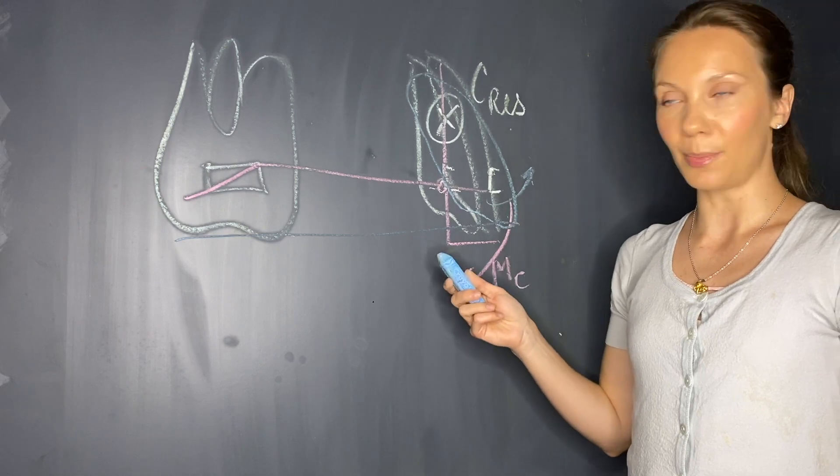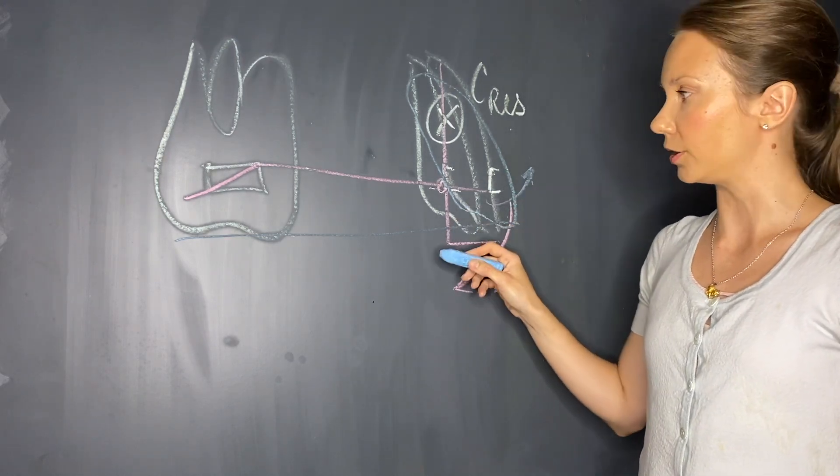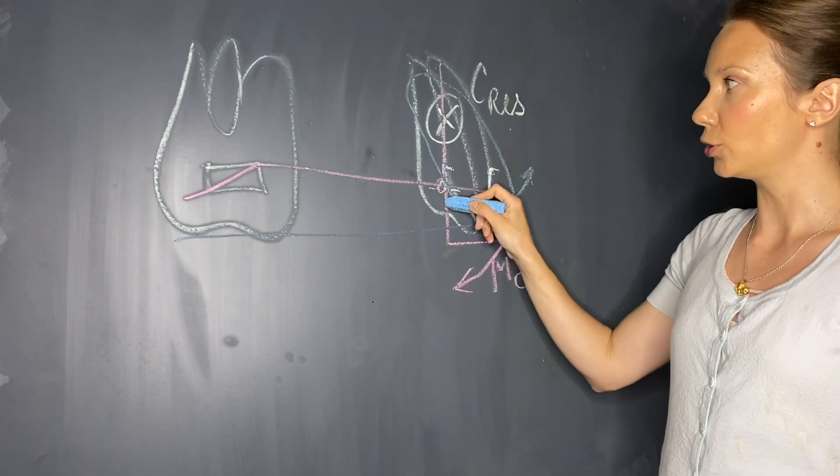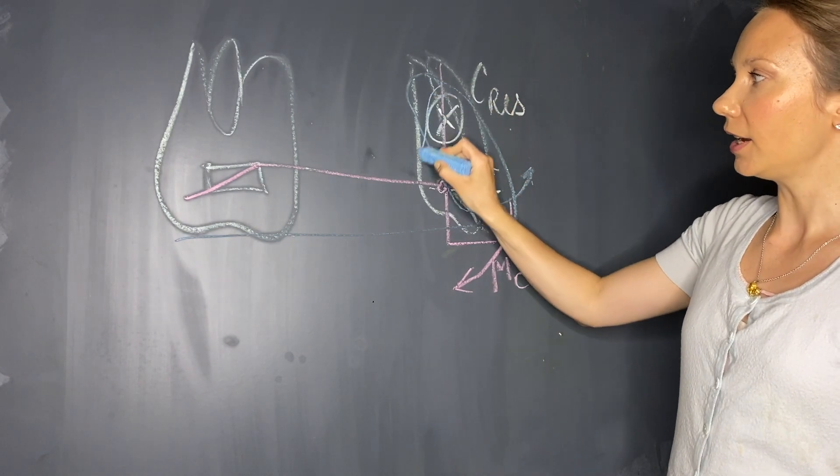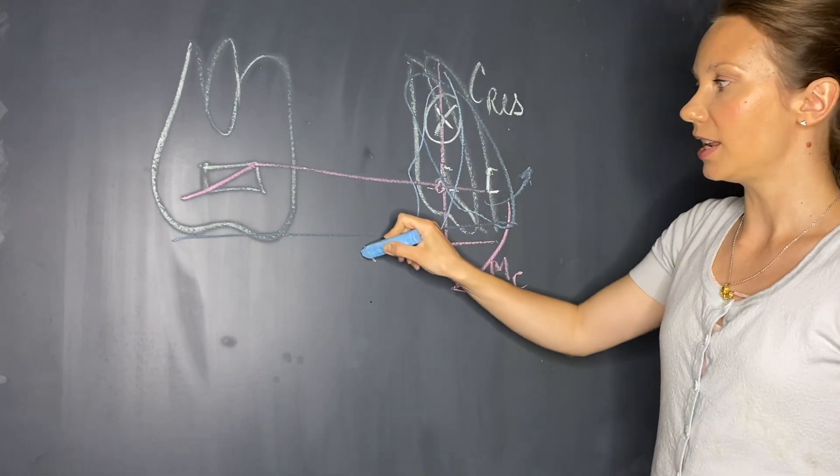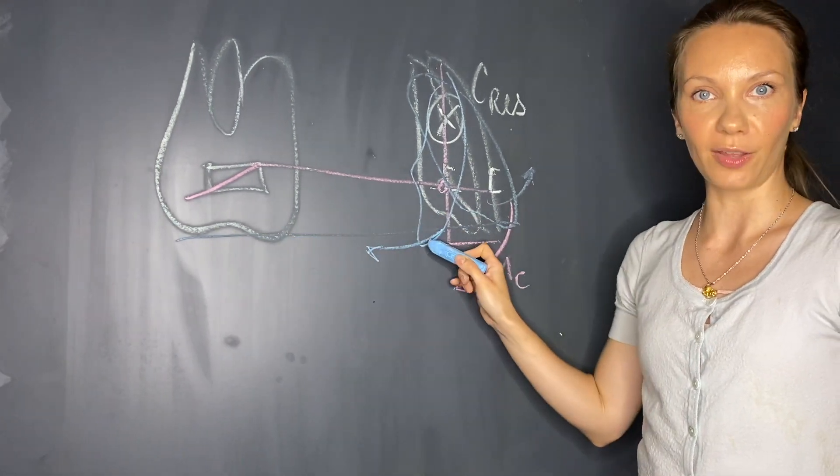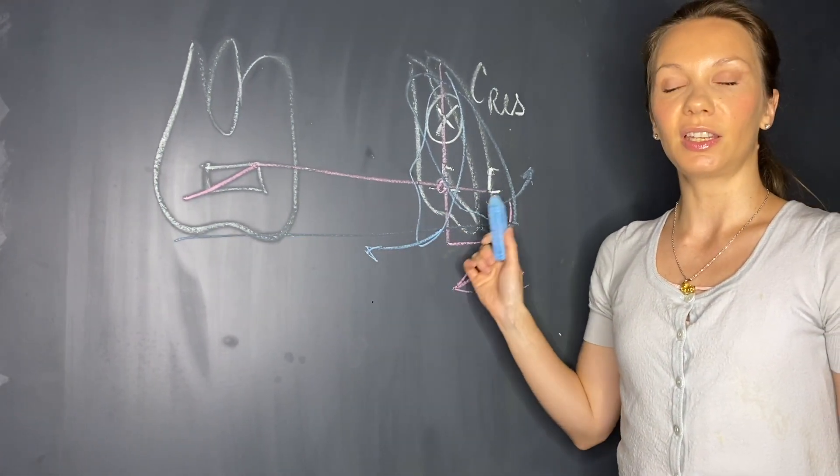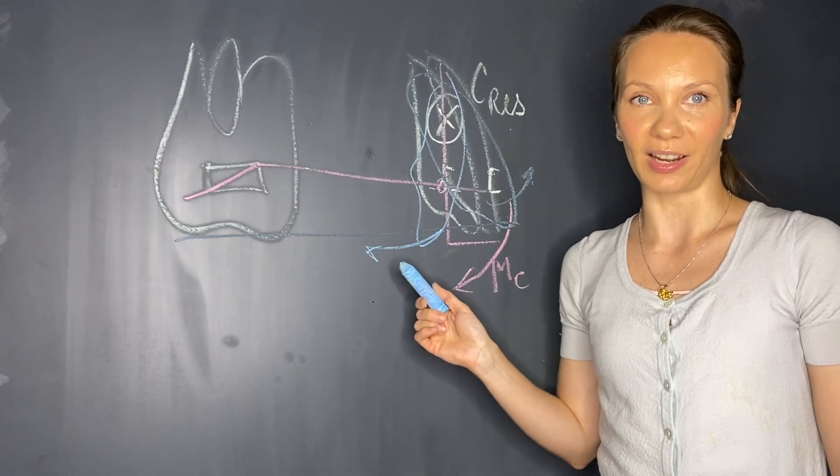The opposite happens when an extrusion arch is activated. When we activate the extrusion arch, lingual tipping of the incisors happens, which actually tends to shorten the length of the dental arch. This is something that should be kept in mind.